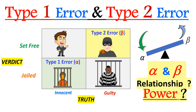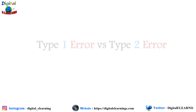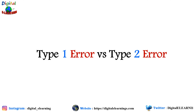This short animated video explains the basic concept of type 1 error and type 2 error in hypothesis testing. We'll also look at the relationship between alpha and beta and how to calculate power in statistics. Making a statistical decision always involves some kind of risk, and this risk in hypothesis testing we classify in terms of type 1 error and type 2 error.